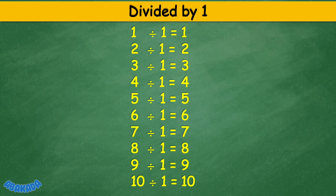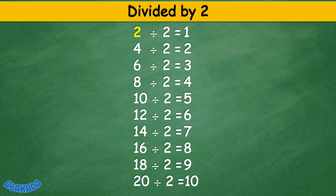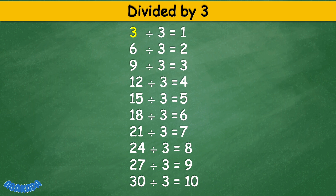10 divided by 1 equals 10. Divided by 2: 2 divided by 2 equals 1, 4 divided by 2 equals 2, 6 divided by 2 equals 3, 8 divided by 2 equals 4, 10 divided by 2 equals 5, 12 divided by 2 equals 6, 14 divided by 2 equals 7, 16 divided by 2 equals 8, 18 divided by 2 equals 9, 20 divided by 2 equals 10.